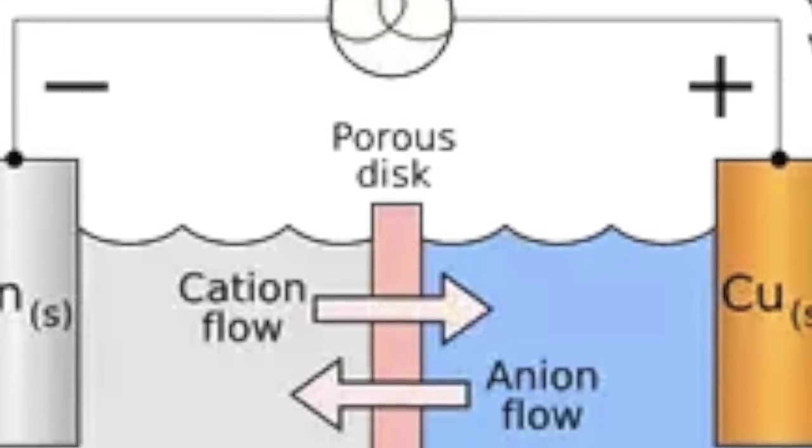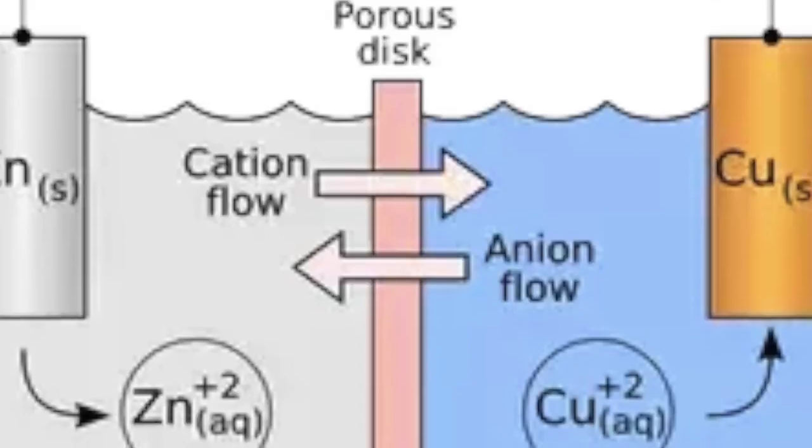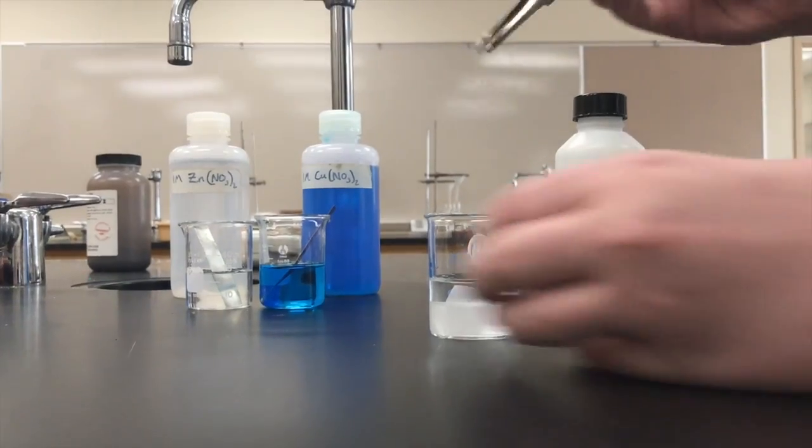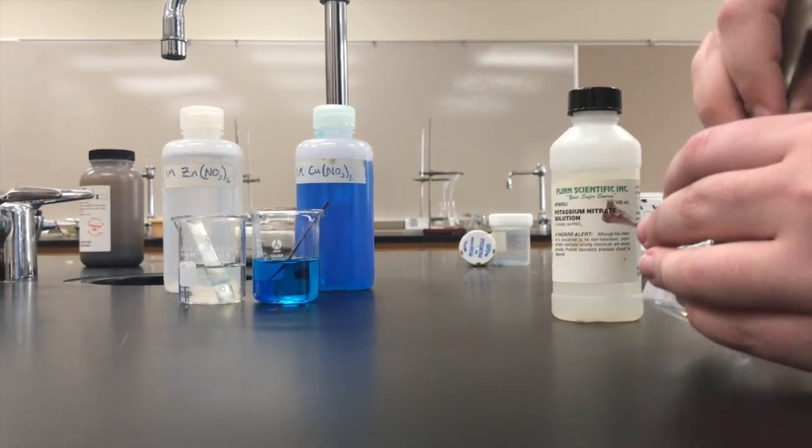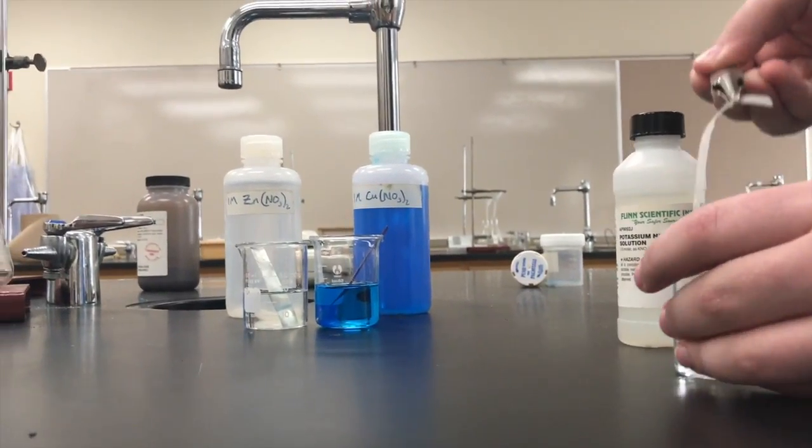A semi-permeable membrane can also be used to separate the solution, but still allow a flow of charge. The ions move into the different solutions to balance the charge and keep the reaction going.